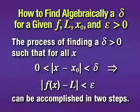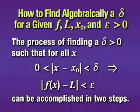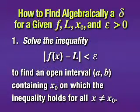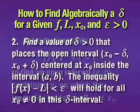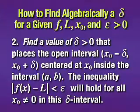How to find algebraically a δ for a given f, L, x₀, and ε > 0. The process of finding a δ > 0 such that for all x, 0 < |x - x₀| < δ implies |f(x) - L| < ε can be accomplished in two steps. Step one: solve the inequality |f(x) - L| < ε to find an open interval (a, b) containing x₀ on which the inequality holds for all x ≠ x₀. Step two: find the value of δ > 0 that places the open interval (x₀ - δ, x₀ + δ) centered at x₀ inside the interval (a, b). The inequality |f(x) - L| < ε will hold for all x ≠ x₀ in this delta interval.